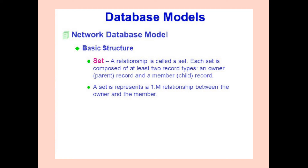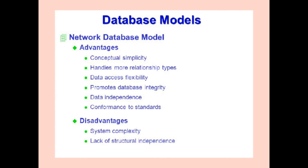Let's understand the network database model. The basic structure is a set — a relationship is called a set. Each set is composed of at least two record types: an owner (parent record) and a member (child record). A set represents a one-to-many relationship between the owner and the member. Advantages include conceptual simplicity, handles more relationship types, data access flexibility, promotes database integrity, data independence, and conformance of standards. Disadvantages are system complexity and lack of structural independence.